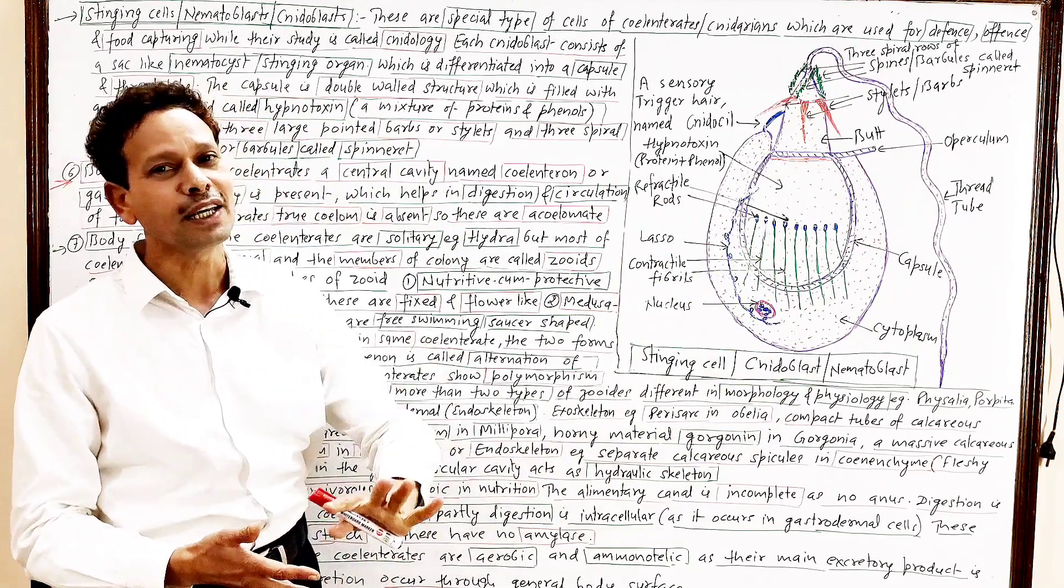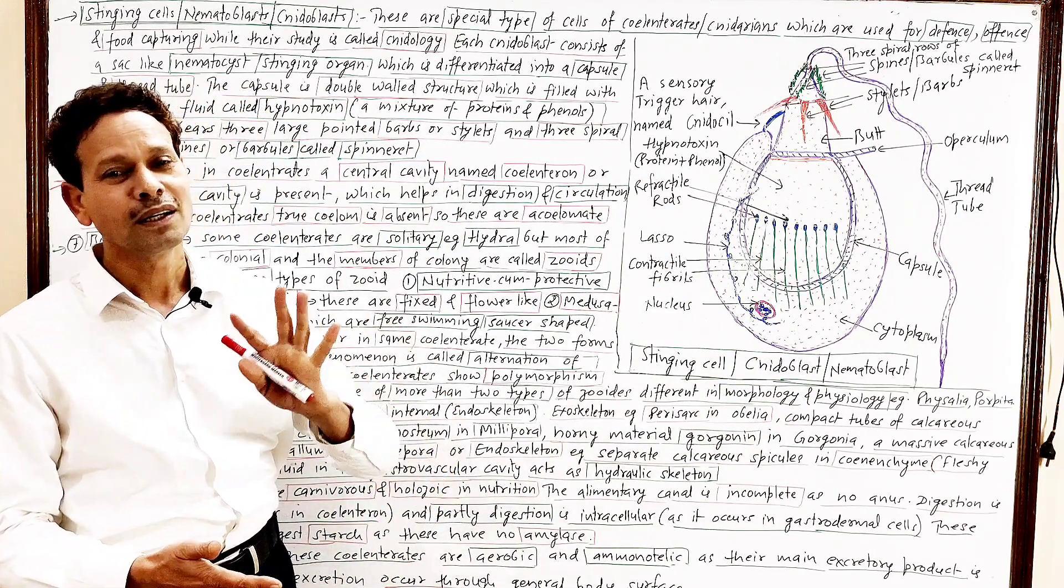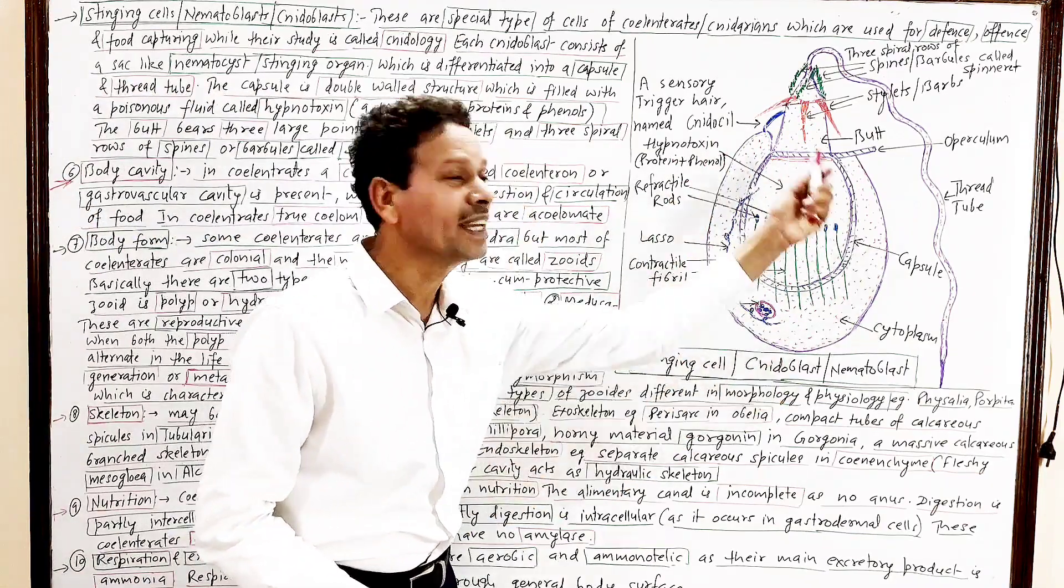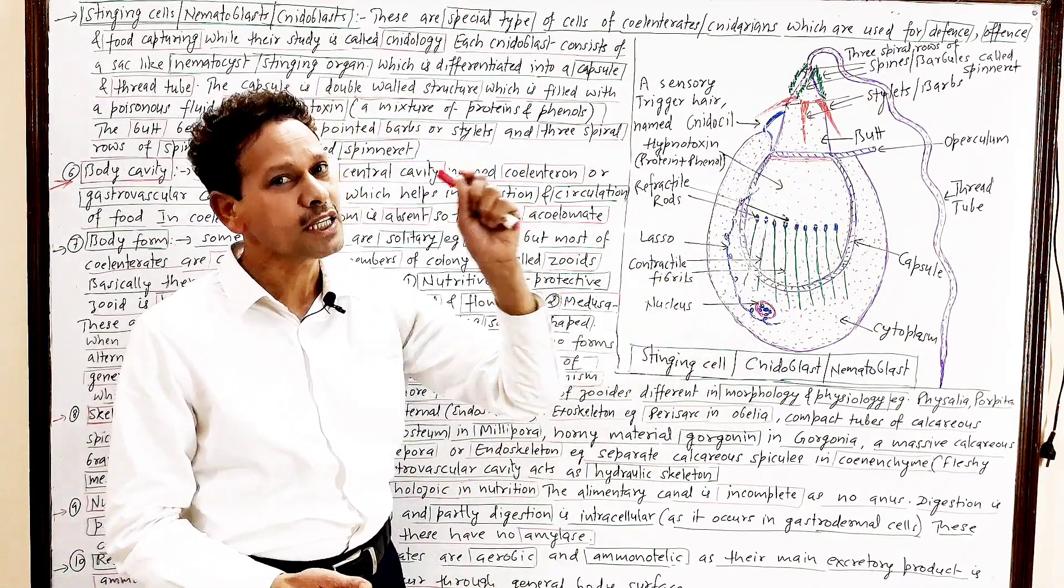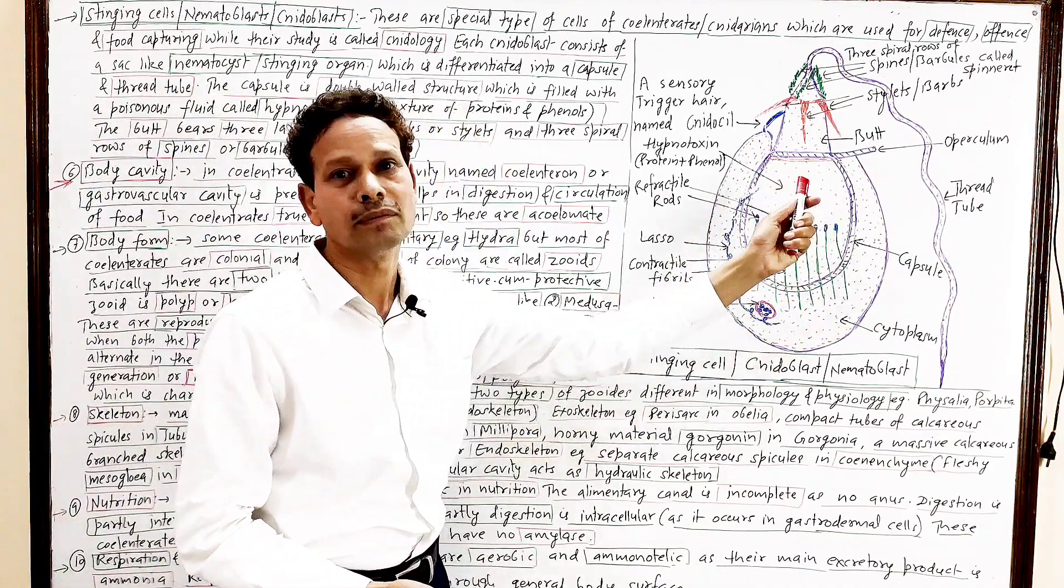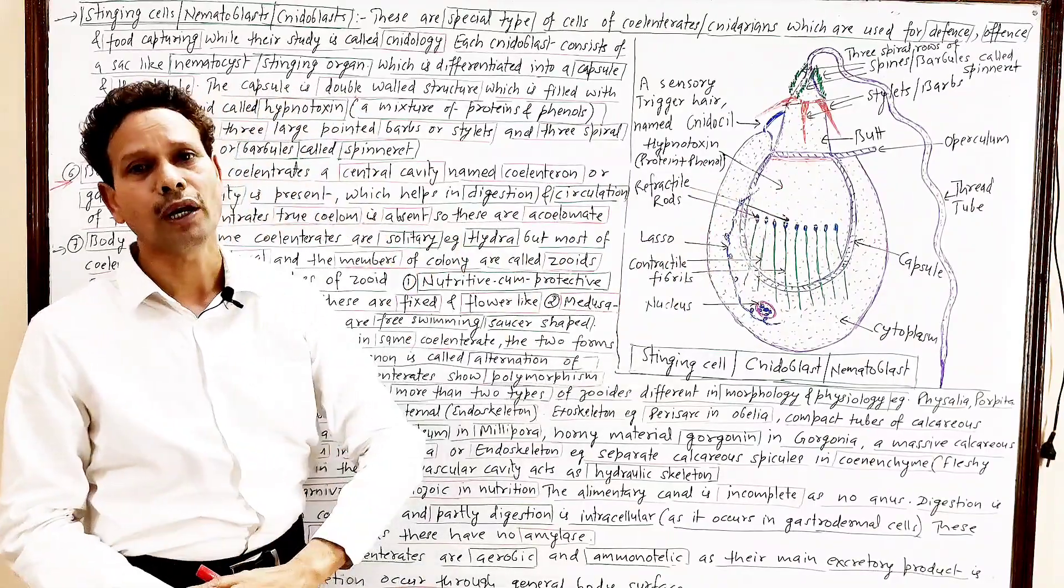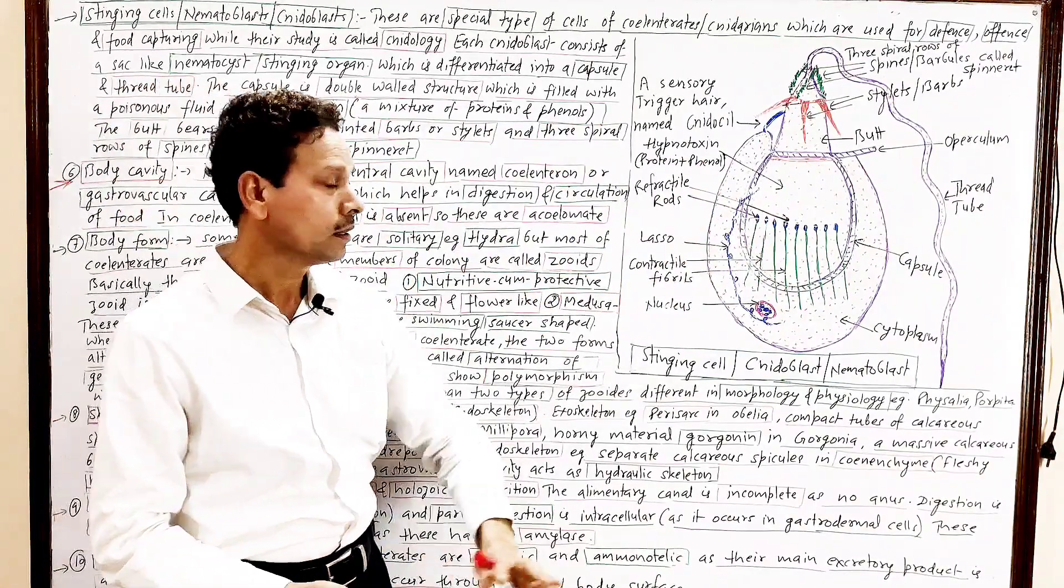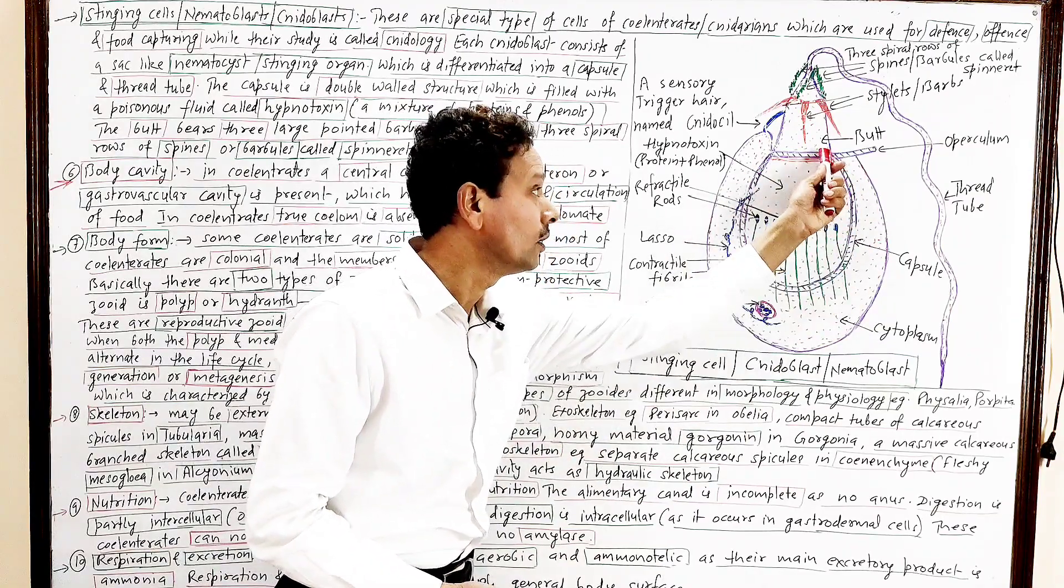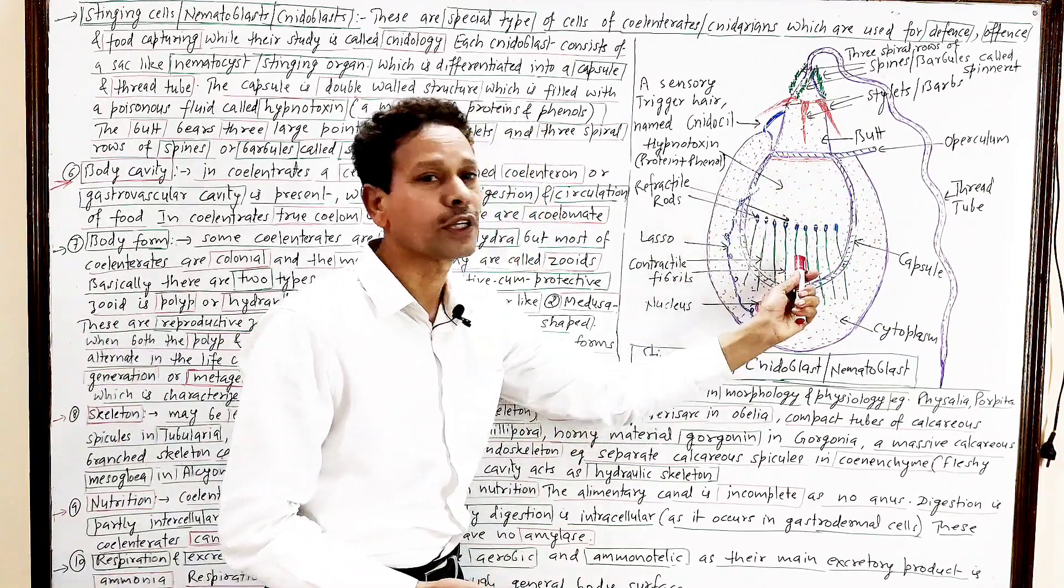The study of these nidoblast, that study is named nidology. Dear students, this stinging cell having a special type of structure and that sac-like structure, which is stinging organ, that is nematocyst. And each nematocyst having this oval double-walled structure, this one is capsule.